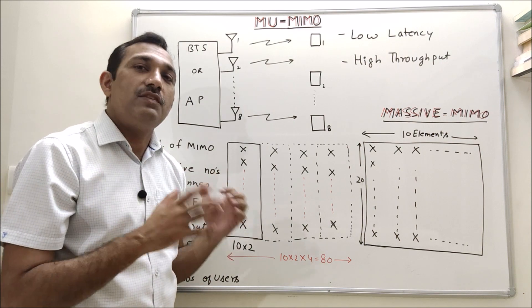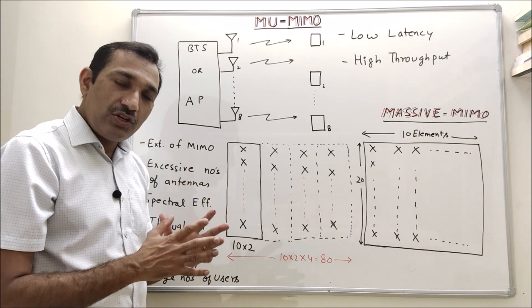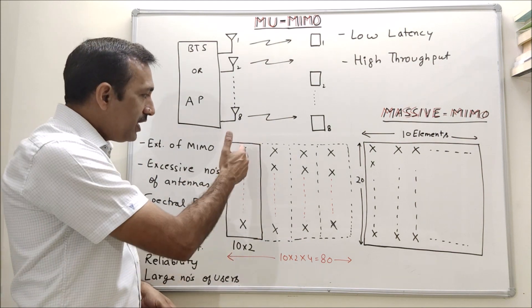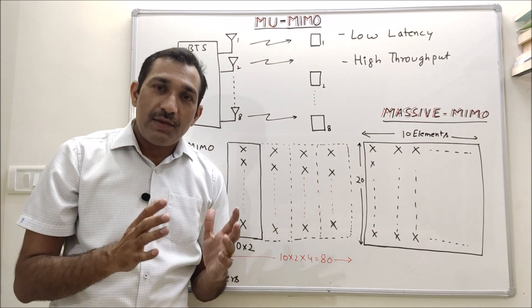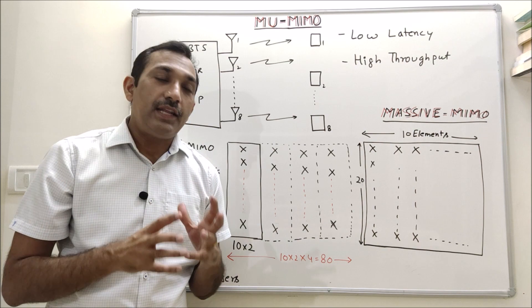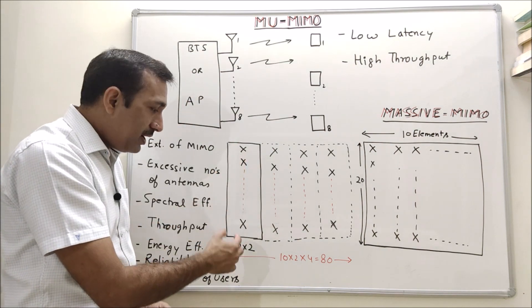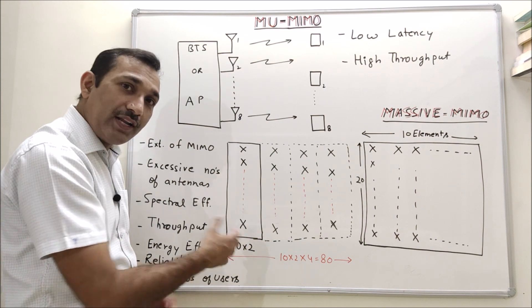As name suggests there is something massive. In a standard base station or BTS antenna we have a column where we have radiating elements. This cross indicates it is a plus minus 45 degree polarization. That means I have 10 radiating elements with two polarization, so effectively I have 20 radiators.